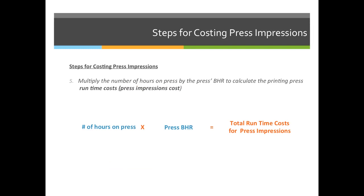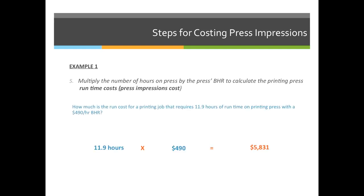For example, if the press runs 18,000 impressions per hour at $432 per hour, that per-hour cost is the budgeted hourly rate. Going back to the first example: how much is the run cost for a printing job that requires 11.9 hours of run time on a printing press with a budgeted hourly rate of $490 per hour? 11.9 hours, which we already calculated, multiplied by $490 BHR gives a total run cost of $5,831.